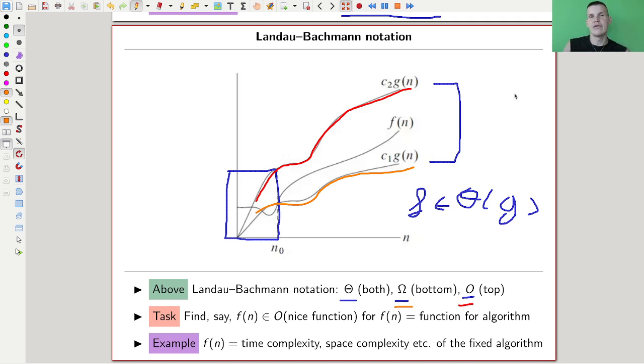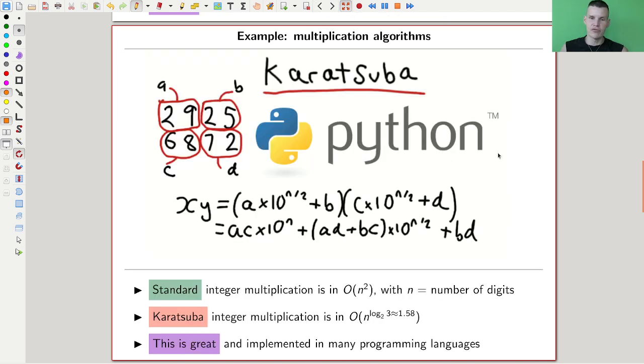We want to say f should be O of a nice function. O of a nice function is the worst case scenario. Theta is more like the asymptotic growth rate, and omega would be the lower bound, at least as bad as something. Some people study average case scenario, which honestly is somewhat more important for an algorithm than worst case, but usually people study worst case. Capital O is usually the standard one, and I'm going to use that as well, mostly because it's easier than studying the average run time.